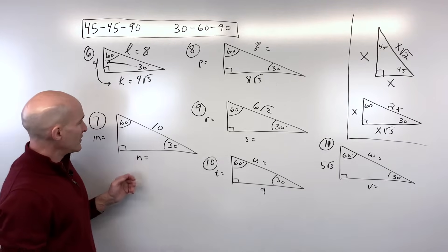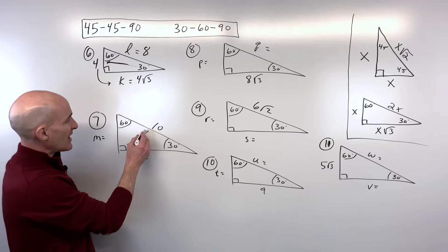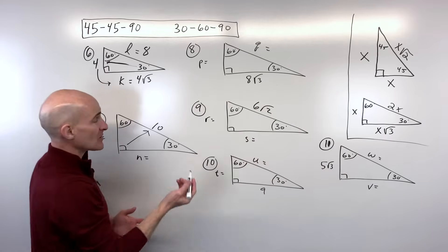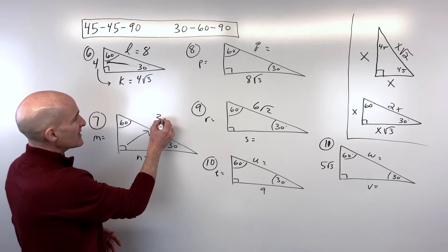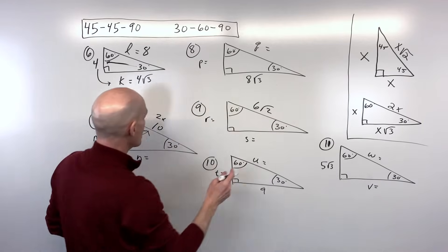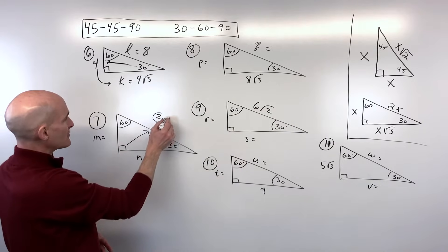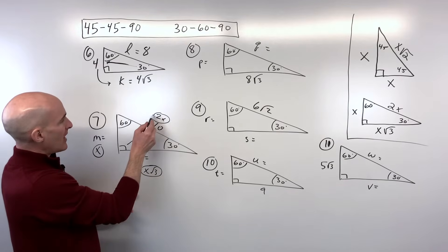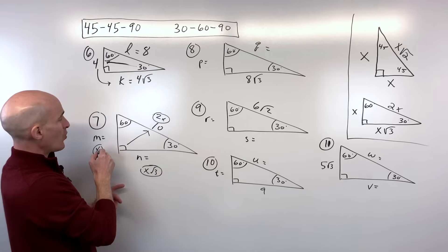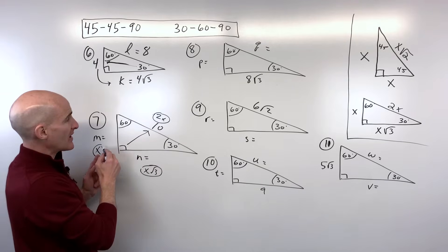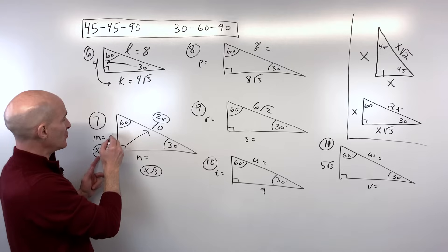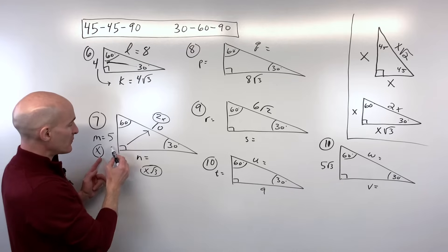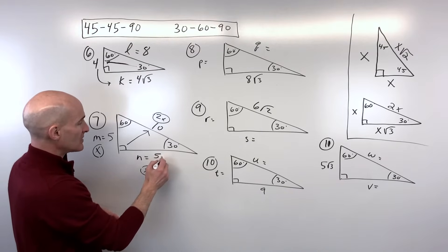For number seven, they're giving us the hypotenuse — the 2x side. One technique is to superimpose the variables over the triangle: that's the 2x side, the 1x side, and the x√3 side. To go from 2x to 1x, divide by 2: 10 divided by 2 is 5. Then from x to x√3, multiply by √3: 5 times √3 is 5√3.